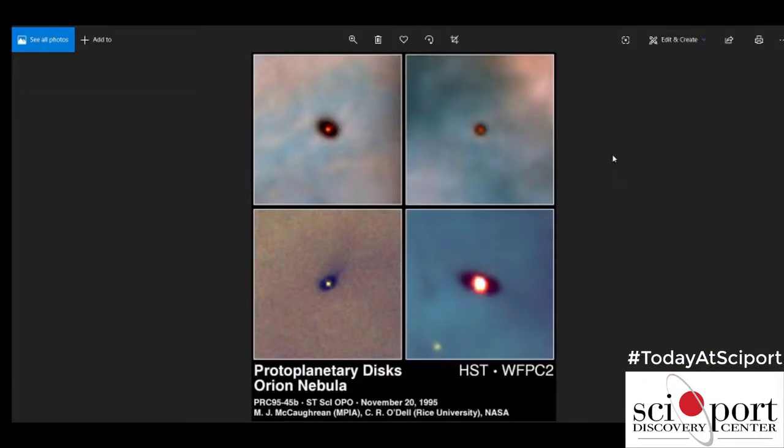In fact, there are a multitude of stars that are being formed in and around the Orion Nebula. This is just a picture of a few of them. And we believe our own solar system looked like this billions of years ago when it was first forming.